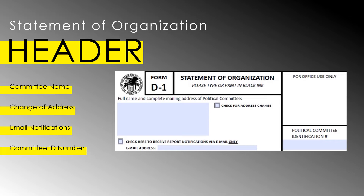In addition, you will find a small checkbox for changing the address of an existing committee, as well as a checkbox to indicate you want to receive report notifications via email only. If you choose that option, please remember to include a valid email address in the space provided. The Political Committee Identification Number is assigned by the board once you file the D-1, so if you're creating a new committee, just ignore that box. If you are amending a D-1 for an existing committee, you can enter your ID number if you know it, but it's not essential.